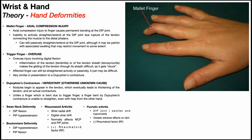If that tendon gets ruptured by that hyperflexion axial compression injury, you can no longer actively extend at the DIP joint, so it'll just be resting in that flexed position. Mallet finger only affects the DIP joint — it does not affect the PIP or the MCP joint. If you have an additional deformity at the PIP joint as well, you need to consider something else, like a swan neck or a Boutonniè re deformity.